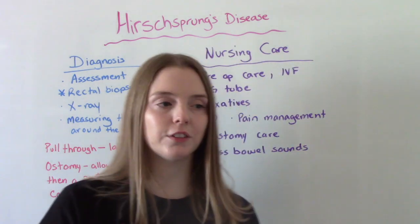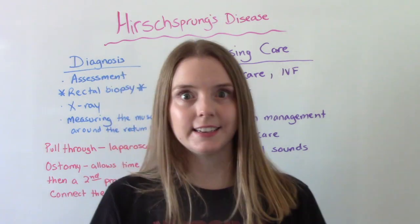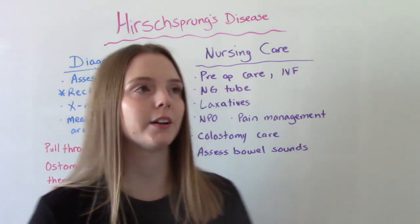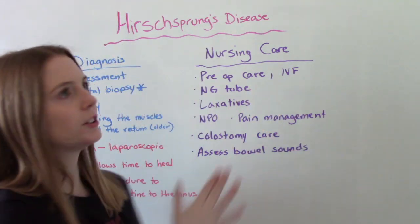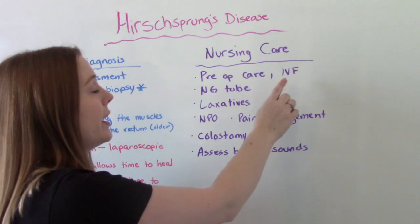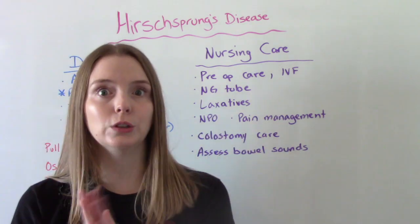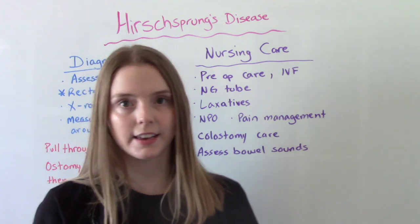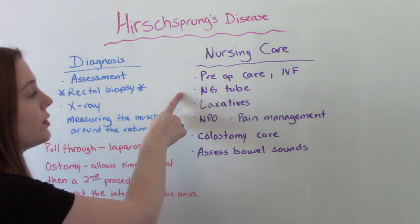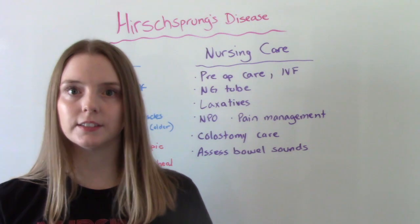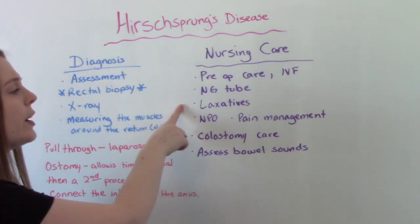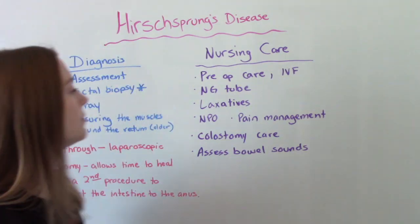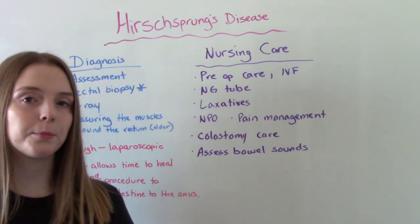Your nursing interventions are going to be related to these things. For preoperative care, we want to pay very close attention to fluid and electrolyte balance — especially since they're little — so IV fluids are key and strict intake and output is key. They're also going to have an NG tube, so we'll need to insert that. Very rarely, they might require laxatives before surgery. Of course, they're going to be NPO.